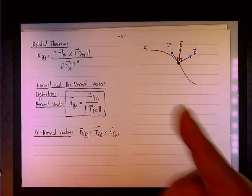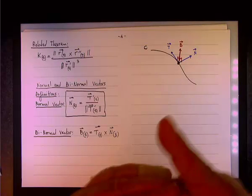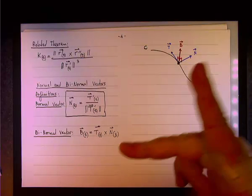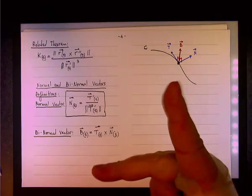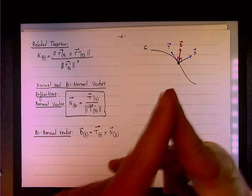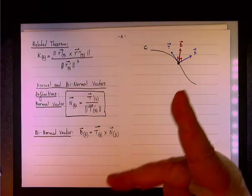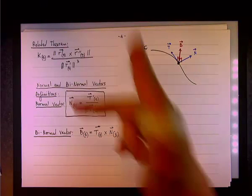So, if this is t and t is a tangent to the curve, n will be perpendicular to t and b will be perpendicular to both. So, thumb goes to index goes to the middle. Okay? Like so. All right. I think I'll stop here.